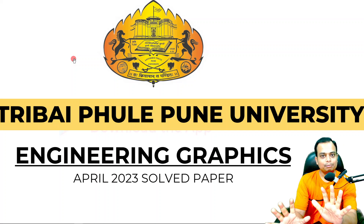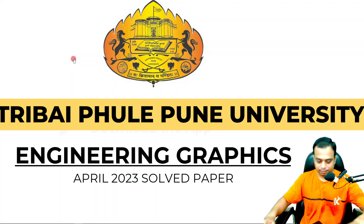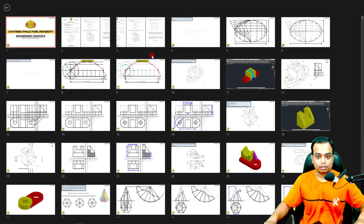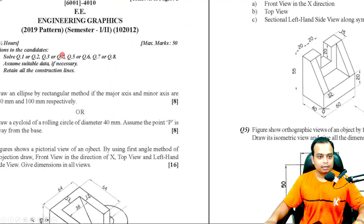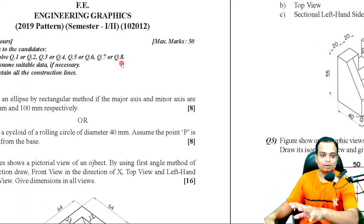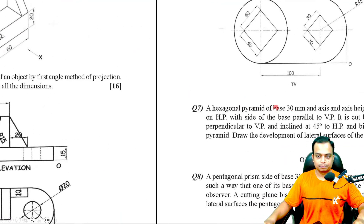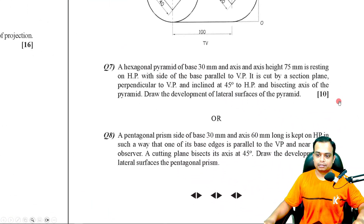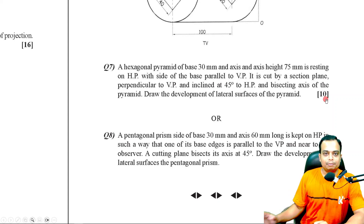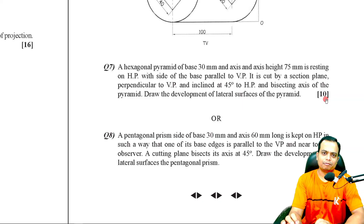This is going to be our seventh problem in this question paper series from Pune University, April 2023. This is going to be fun. There is an option — either you can go for problem number seven or problem number eight. As a teacher making the solution, I don't have any option, so let me go for problem number seven. This is for 10 marks, and you can crack this — you can make the entire drawing in less than 20 minutes, very comfortably.